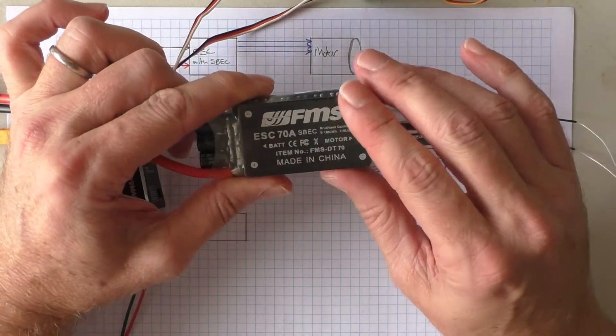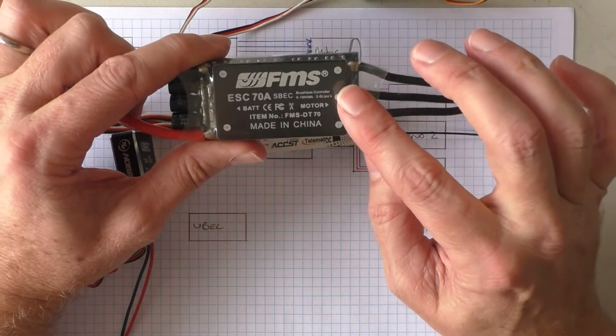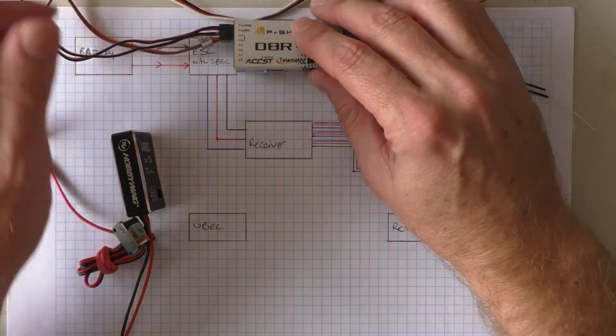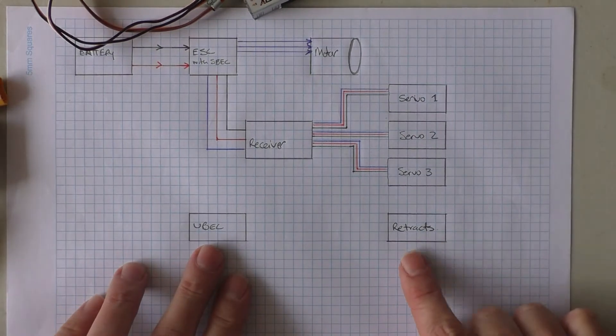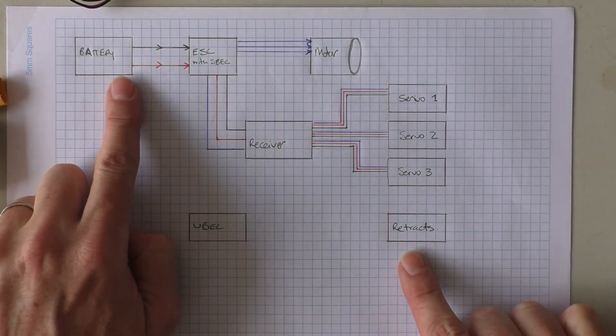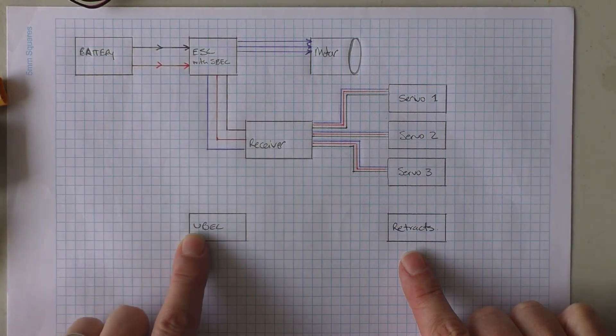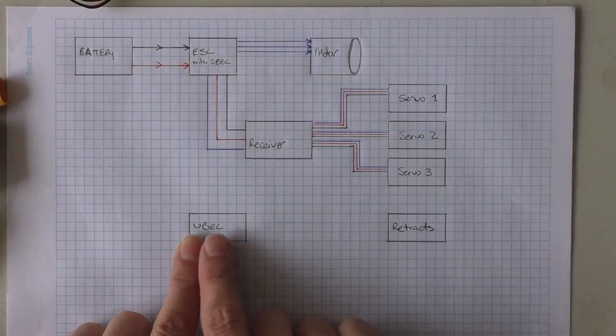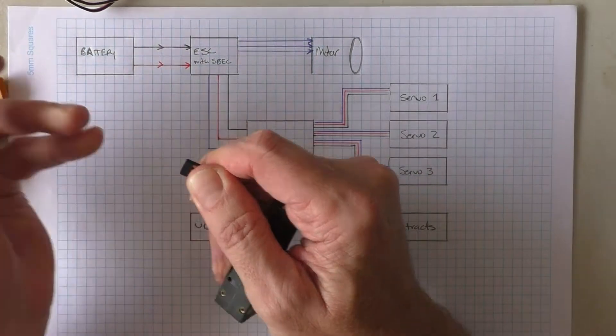But I obviously have confidence in all my ESCs, so I'm not worried about that. But what I want to do is I want the UBEC to power the retracts. What I want to do is I want to pull off a power supply from here down into the UBEC, and then feed that power to the retract servo. So that's what I want to do.